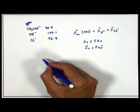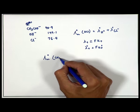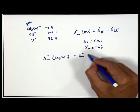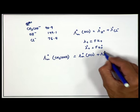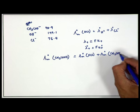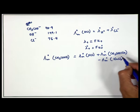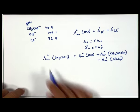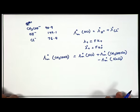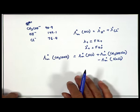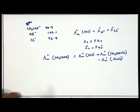Applying Kohlrausch's law for acetic acid: λm⁰(CH₃COOH) = λm⁰(CH₃COONa) + λm⁰(HCl) - λm⁰(NaCl). Plugging in the respective numbers gives λm⁰ for the weak electrolyte. Direct determination is not possible because λm versus √c for weak electrolytes is non-linear, so this indirect method is necessary.